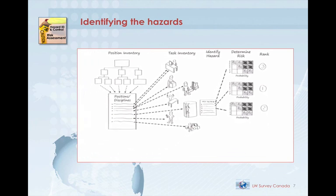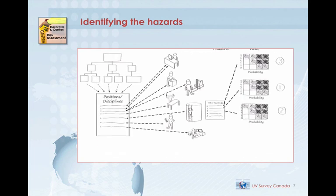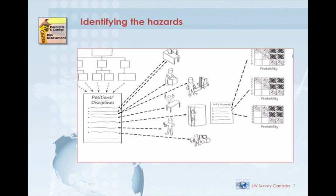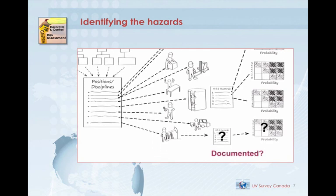Finally, to close the loop on this system, there must be a demonstrated and proven process for formal hazard assessment as new operations, modified operations, or conditions arise. If a new position is created, if new tasks are introduced, or if new equipment is used, are the hazards identified and their risks assessed? Was this documented in some way? That's formal hazard assessment — different terms might be used, but this is what you're looking for in a company's formal health and safety hazard assessment process.